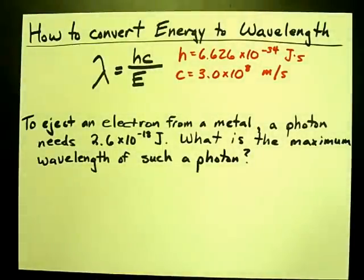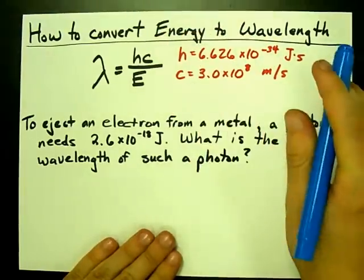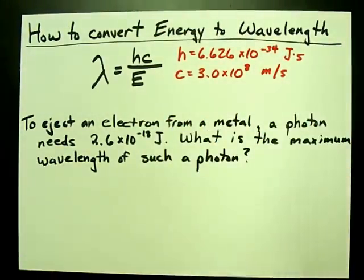The answer is, take h times c—that's Planck's constant times the speed of light—and just divide it by your energy.